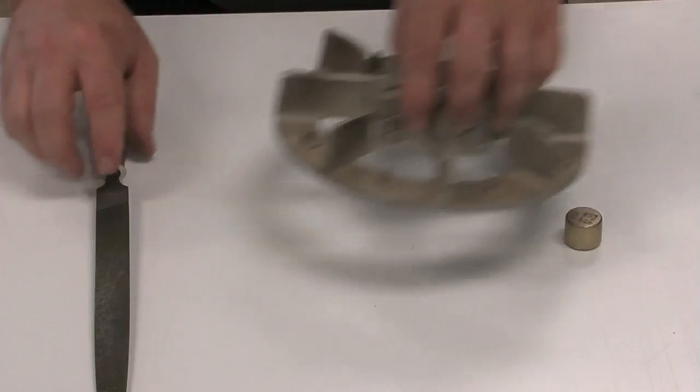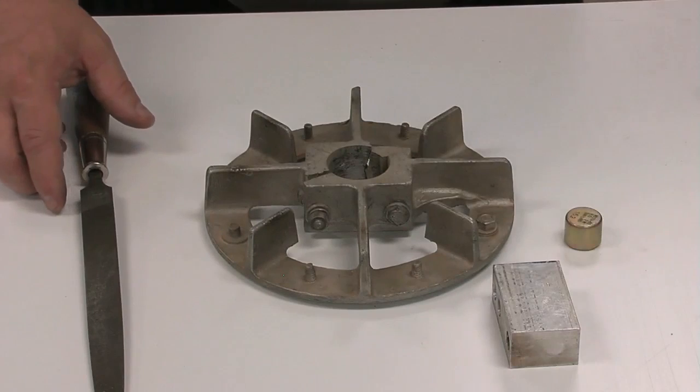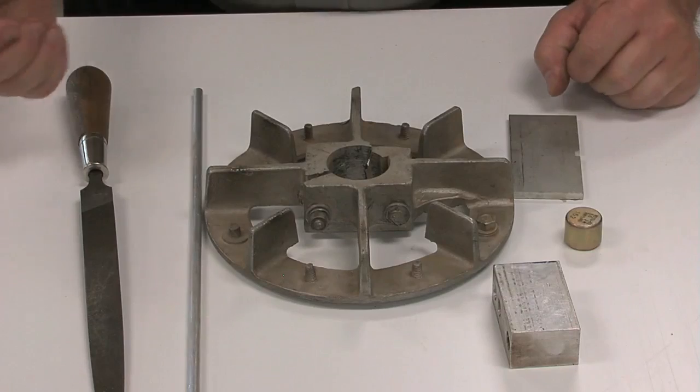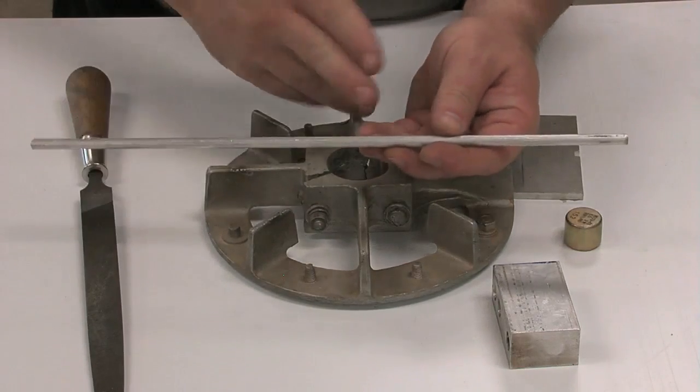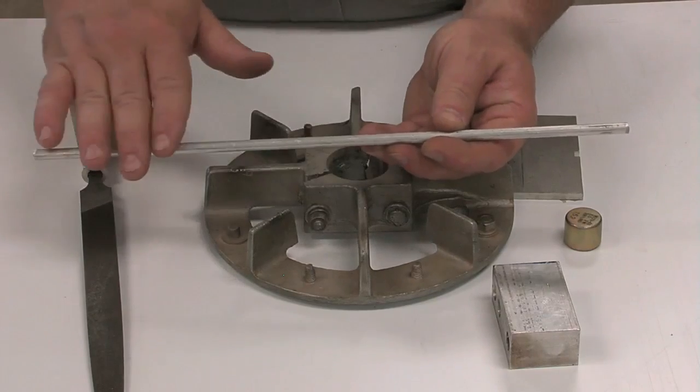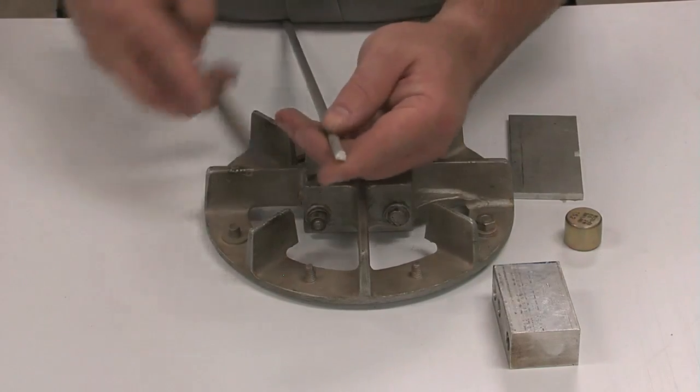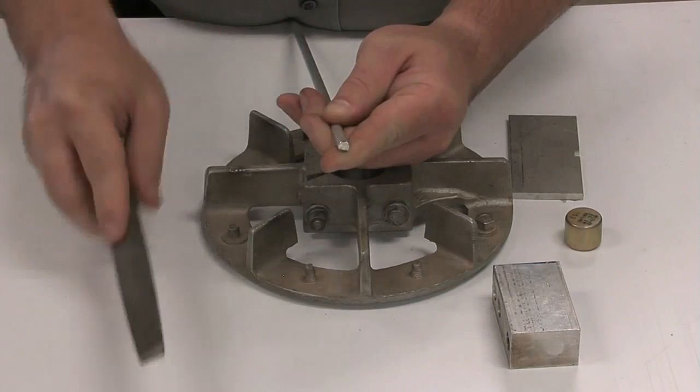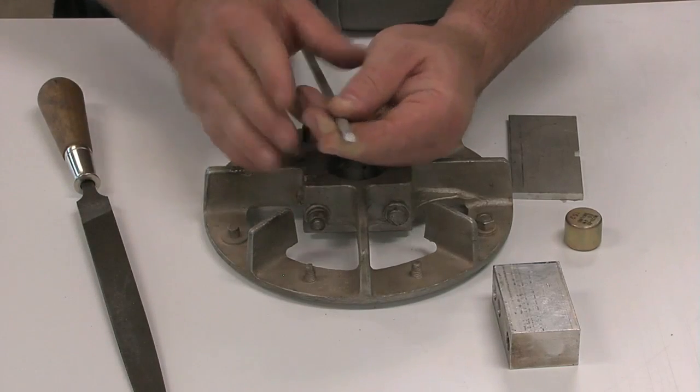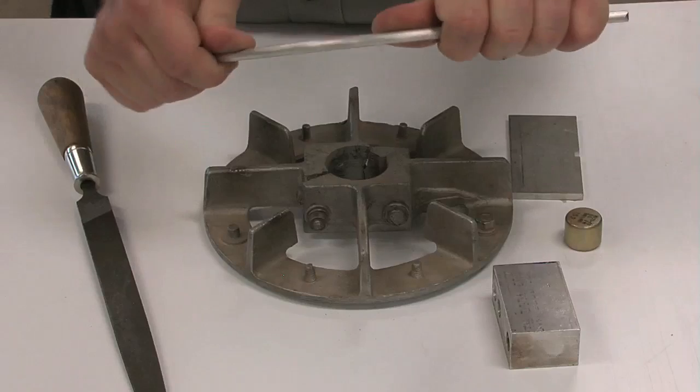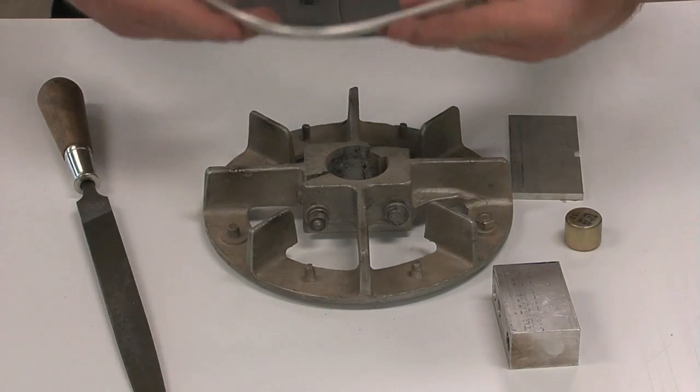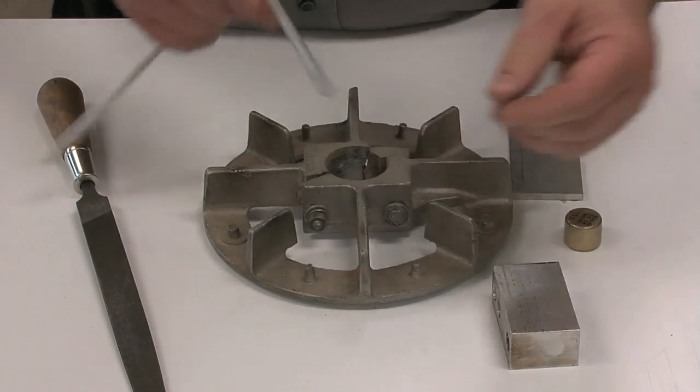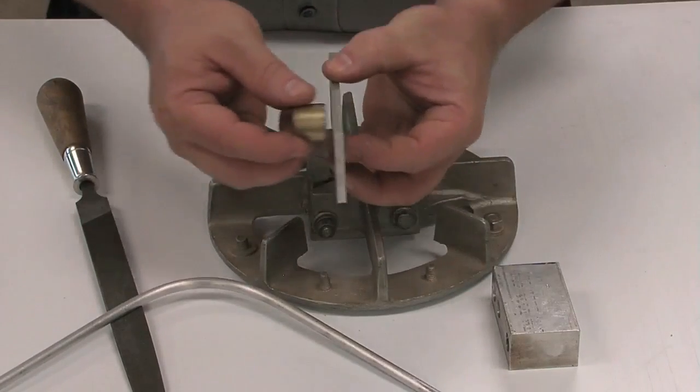First one we're going to look at is aluminum, and we've got some different varieties of aluminum here. With aluminum, primarily you're going to look at the color. It's a very white silver color. If we file it, it files very easy. You can see with just a little bit of force, I'm taking a lot of material off. It tends to be very soft and very light. When we file it, the color will remain constant within the material, and it's non-magnetic.